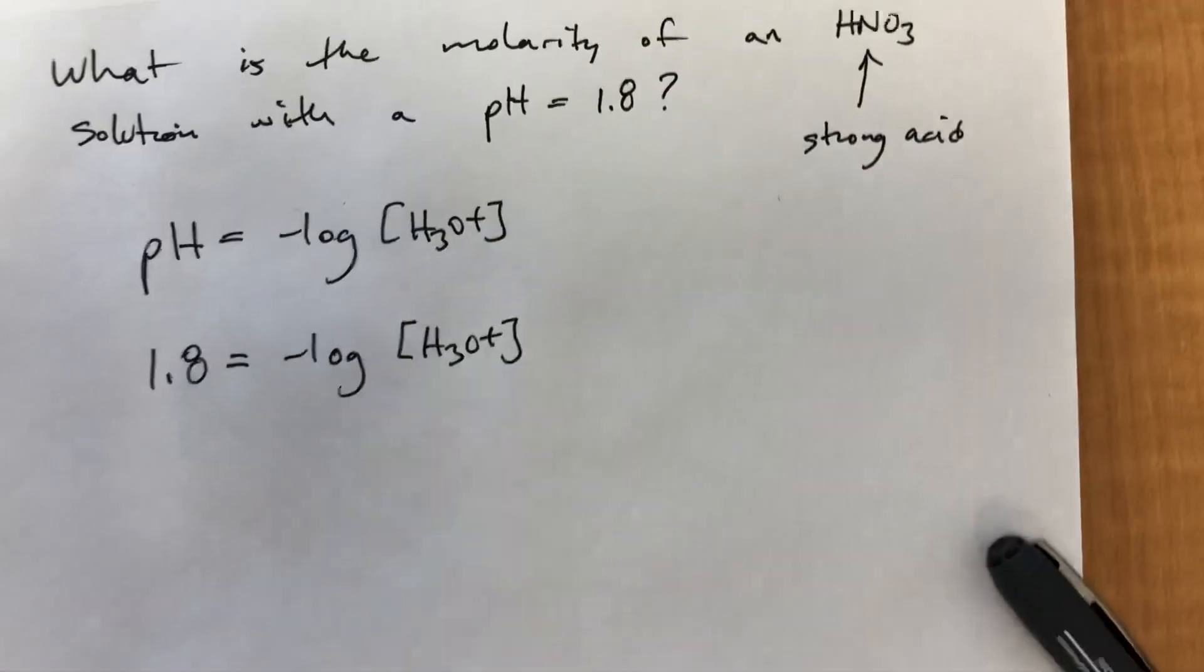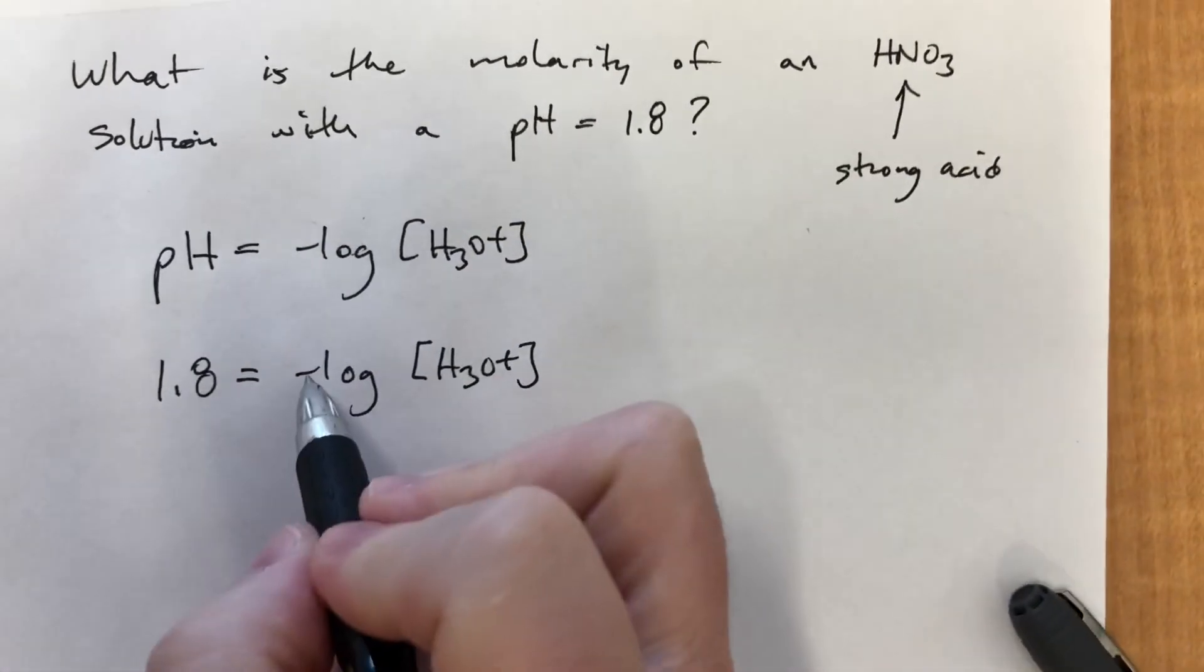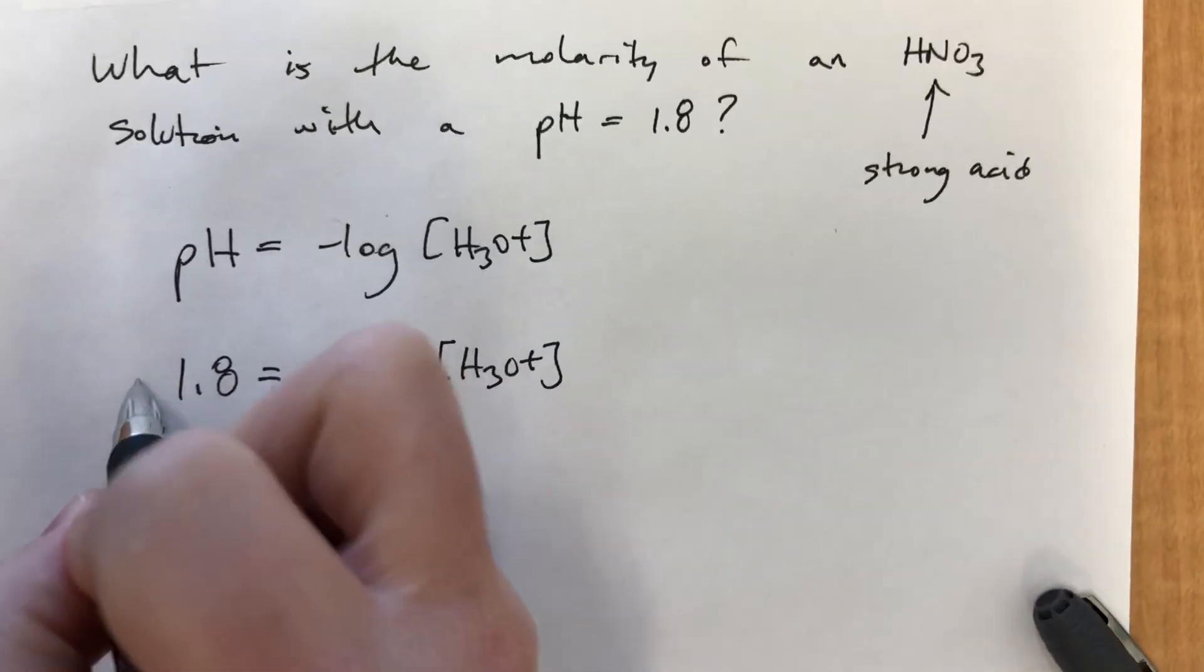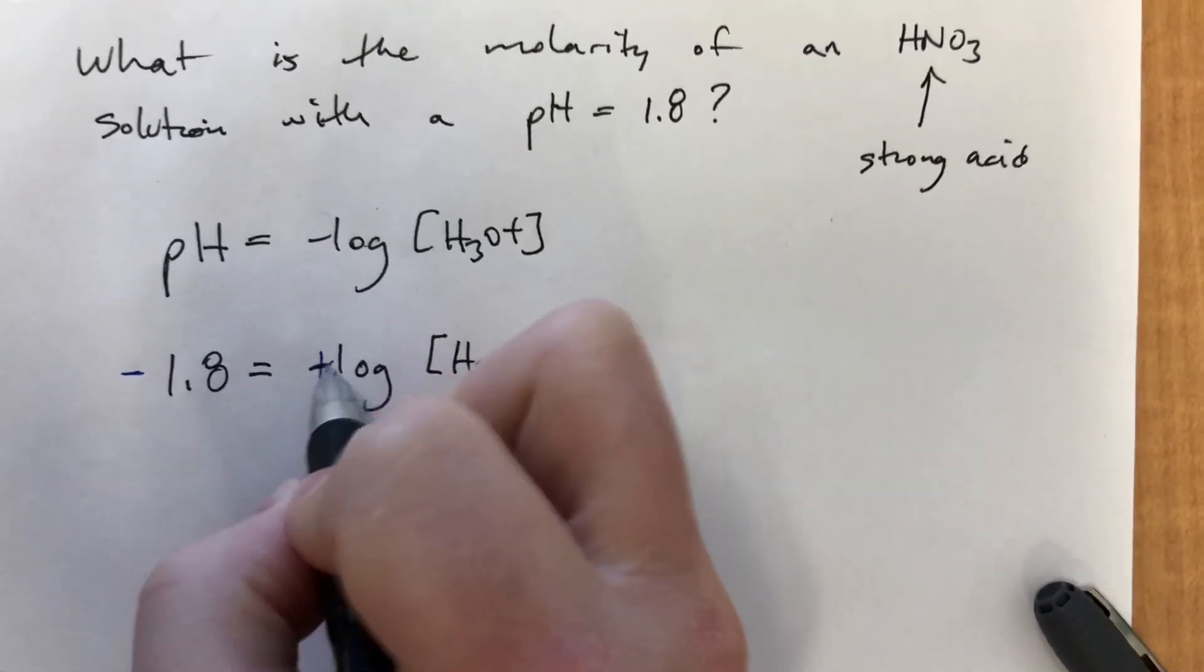Algebra here, switch colors. We basically need to get rid of the negative first. So we're going to multiply both sides times negative 1. That'll become positive.